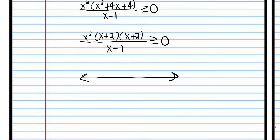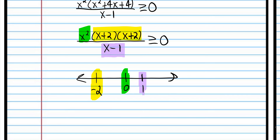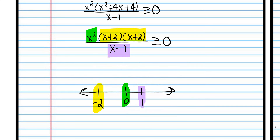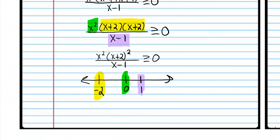We want to know what x values will make this expression zero or greater than zero. So obviously we can plug in zero because that makes the numerator zero. We can also plug in negative two — that will make the numerator zero. And if we plug in one, then we make the expression undefined. That tells us how to divide this up with our intervals. We can actually combine those yellow factors into one expression to help us analyze this.